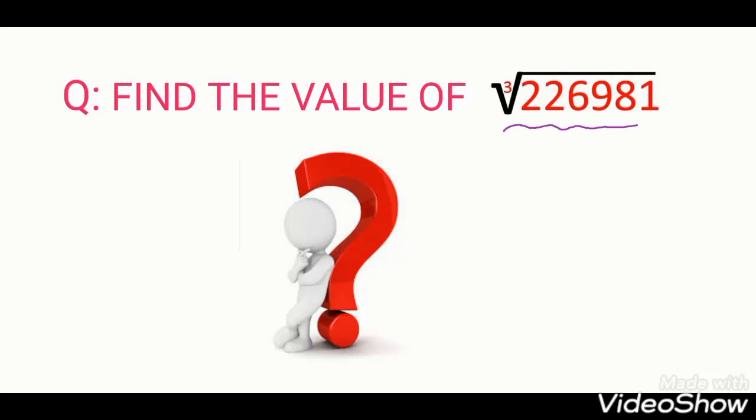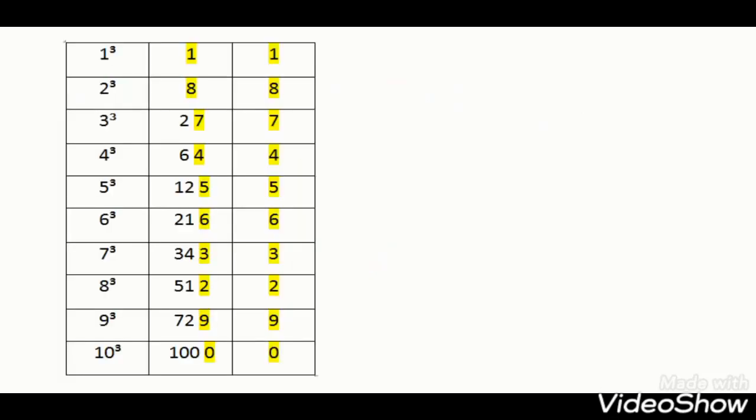To solve this type of problem, you should remember at least cubes of first to 10 numbers and its last digits. Look at here. Here I attached cube of first to 10 numbers. 1 cube is 1, 2 cube is 8, 3 cube is 27, 4 cube is 64, 5 cube is 125, 6 cube is 216, 7 cube... 10 cube is 1000.